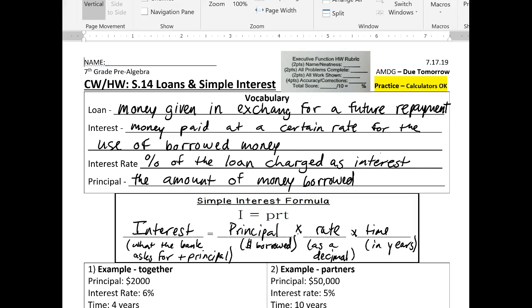So a couple of vocab words right off the bat. A loan is money given in exchange for a future repayment. I'm not saying give you money, you've got to give it to me back and then some, right? And that rolls right into our next vocab word.